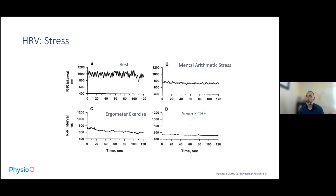Stress is another factor. At rest, heart rate variability shows nice fluctuations. During mental arithmetic stress, you have heart rate increase but significant reduction in fluctuations. The same occurs for exercise. For those with severe congestive heart failure, you basically have no variability.